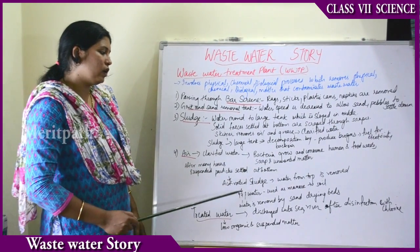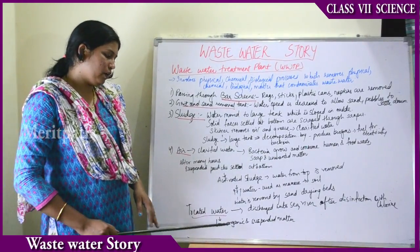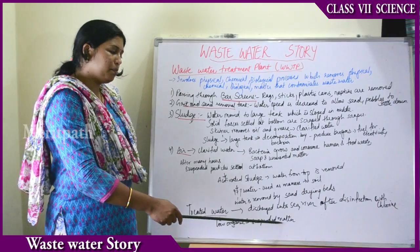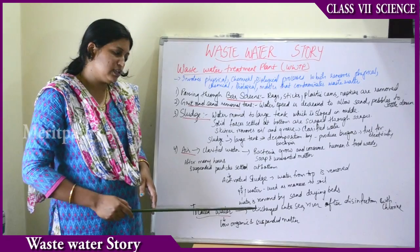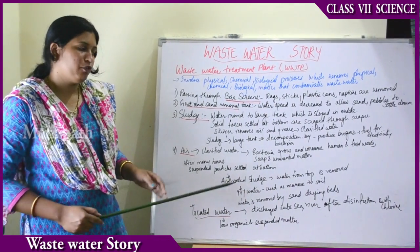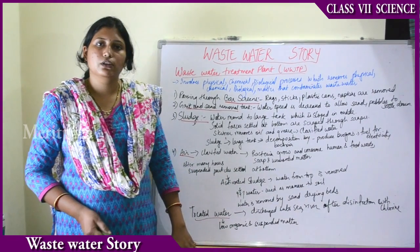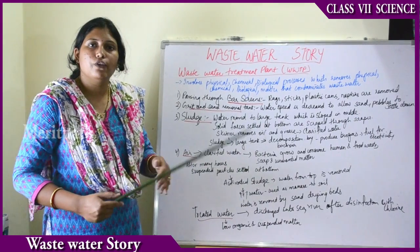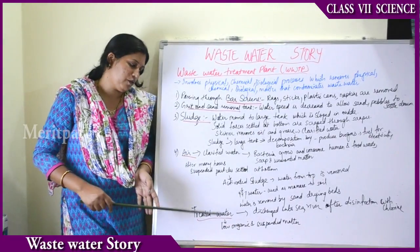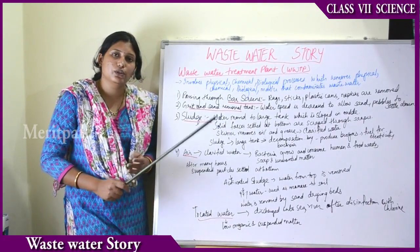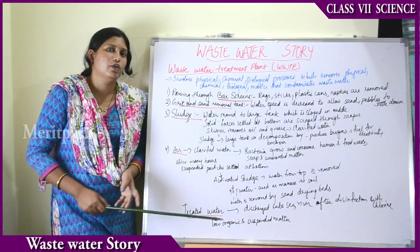After removal of the sludge from the clarified water, we have a relatively pure water, but the treated water still has low organic content and suspended matter so it is not yet ready for direct use. This treated water is further discharged into the sea or river after disinfection with chlorine. The nature then further purifies the remaining water automatically. That is how a wastewater treatment plant works.